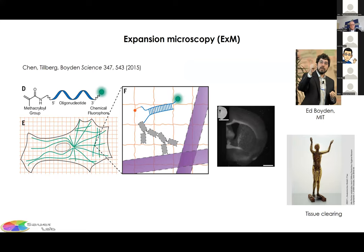Expansion microscopy was introduced by Ed Boyden in 2015 in a seminal Science paper. It is not completely new technology; clearing has been used in pathology for tissue imaging for over 100 years. By changing the protocols of these clearing methods, they achieved that samples can be expanded after gelation.